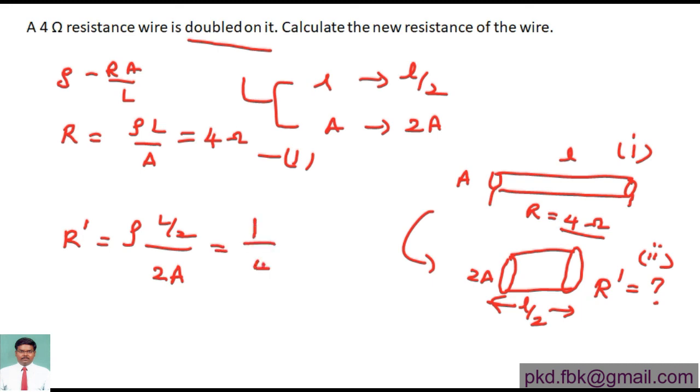After this, I am getting 1 by 4 times ρL by A. But ρL by A from equation 1, I know this value will be equal to 4 ohms, so I can replace it by 4 ohms. On cancelling, I am going to get 1 ohm resistance. So the new resistance after we doubled on it is going to be 1 ohm.